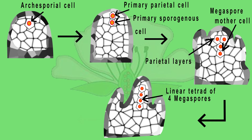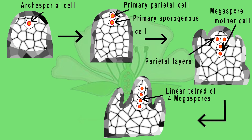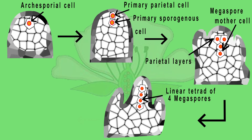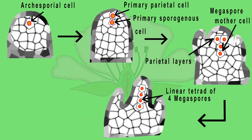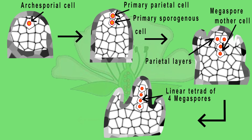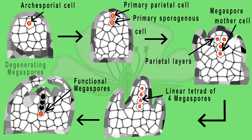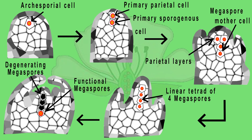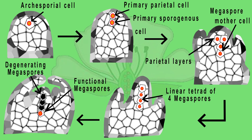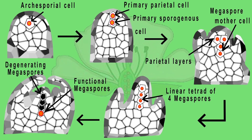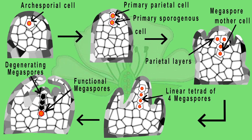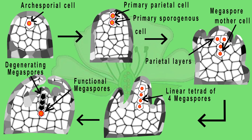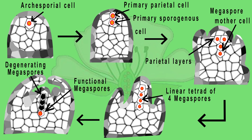The Megaspores are usually arranged in a linear tetrad. Of the four Megaspores formed, usually the chalazal one is functional and the other three Megaspores degenerate. The functional Megaspore forms the female gametophyte or embryo sac.